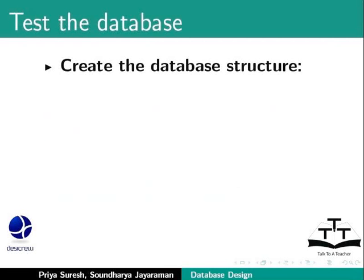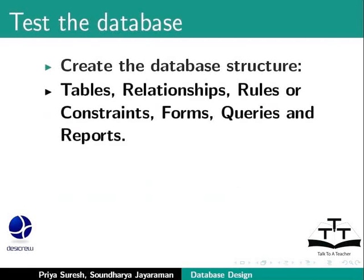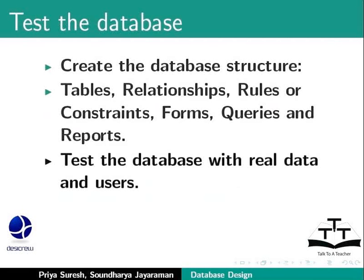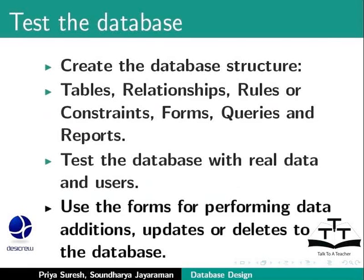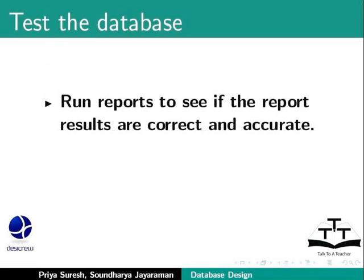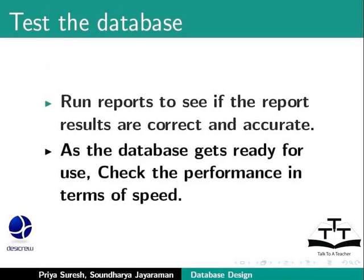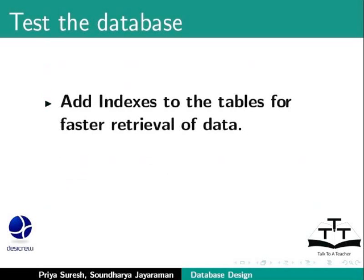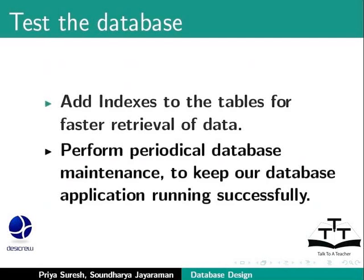Finally, let us test our database design. As we have gone over the database design process, we can create the database structure — the tables, relationships, rules or constraints, forms, queries and reports — and we can test the database with real data and users. Use the forms for performing data additions, updates or deletes to the database. Run reports to see if the report results are correct and accurate. As the database gets ready for use, we can check the performance in terms of speed. We can add indices to the tables for faster retrieval of data, and we should perform periodical database maintenance to keep our database application running successfully.